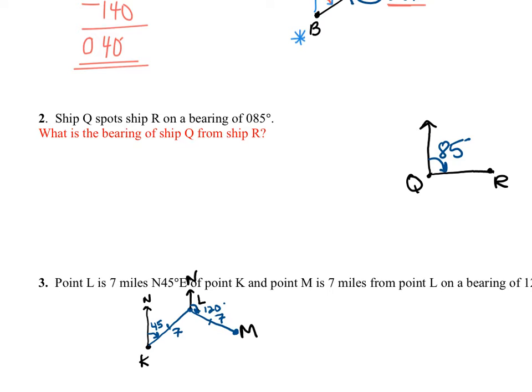And here's our second question. Kind of the same idea. Ship Q spots ship R on a bearing of 085 degrees. So I just picked a point and labeled it Q. That's where I started and I drew my due north and rotated almost 90 degrees and I just labeled it 85. The new question is what is the bearing of ship Q from ship R. So now we're working backwards. We're going to start at ship R and then rotate to Q. But here's what you have to remember.